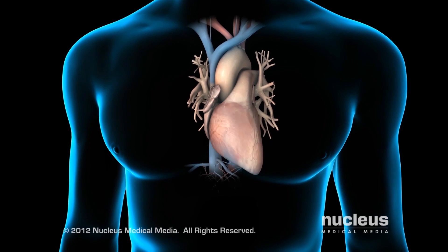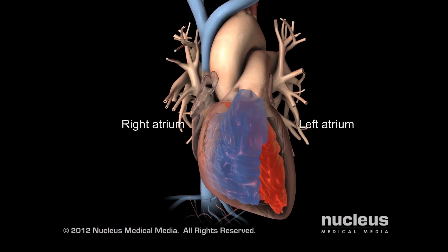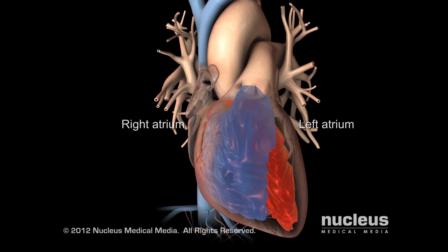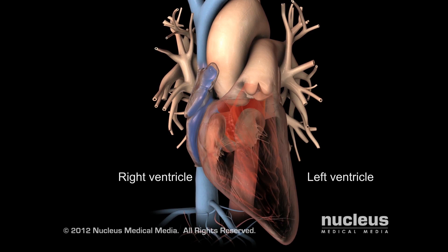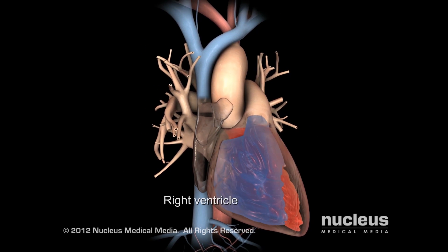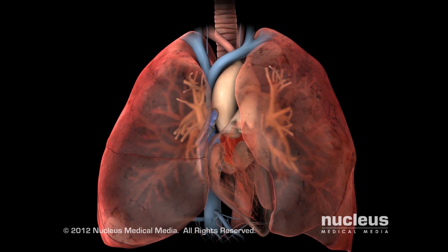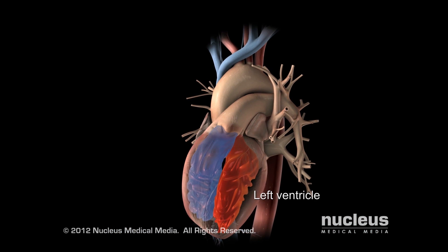Let's start by looking at the normal heart. Your heart is a muscle that works like a pump to move blood throughout your body. It has four chambers: two upper ones called the atria and two lower chambers called the ventricles. The right atrium and ventricle pump blood to your lungs to pick up oxygen. The left atrium and ventricle pump this oxygen-rich blood to the rest of your body through the arterial system.